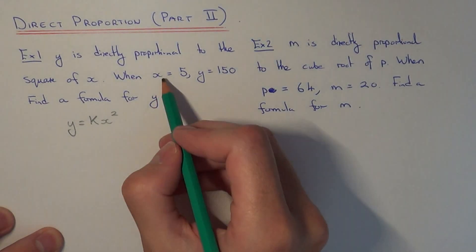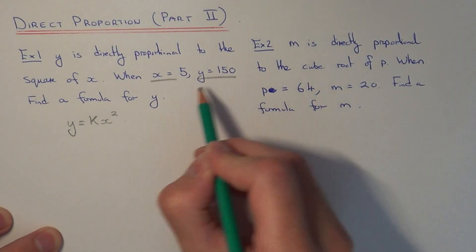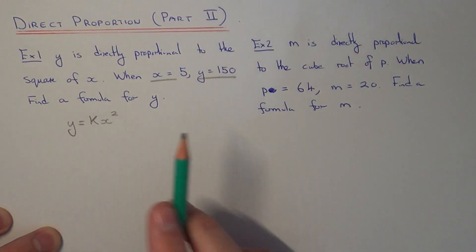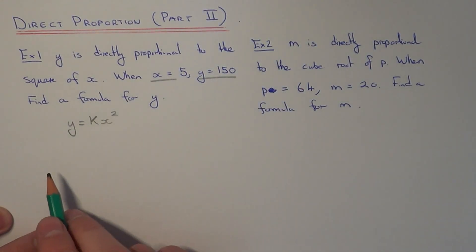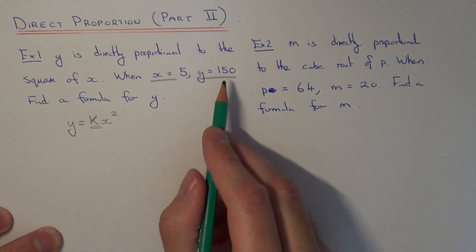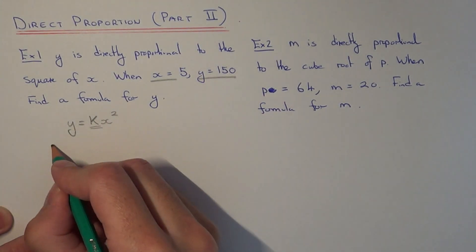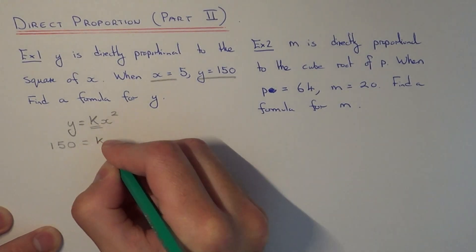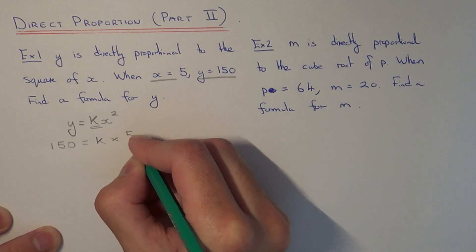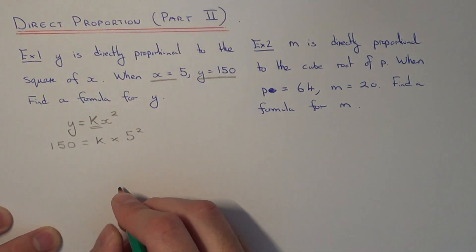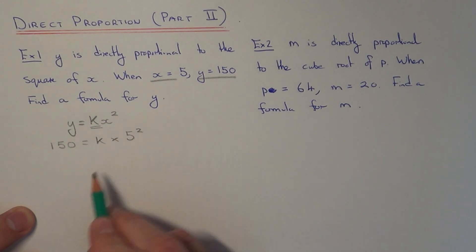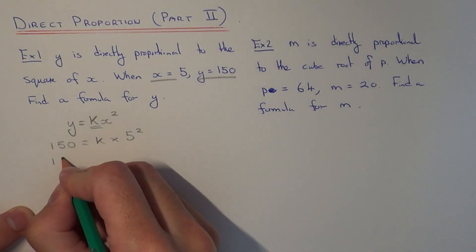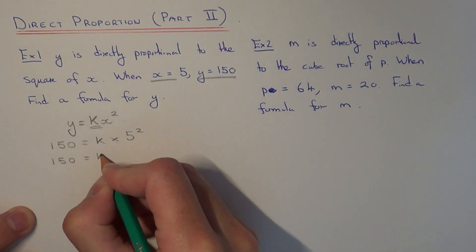We next need to substitute the numbers into this formula to give the value of the constant which is k. So if we sub these numbers into our formula, we get 150 equals k multiplied by 5 squared. Now we know that 5 squared is 5 times 5, that's 25.